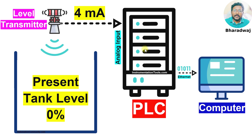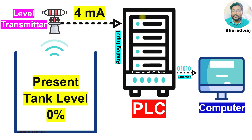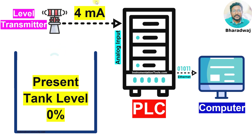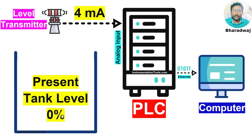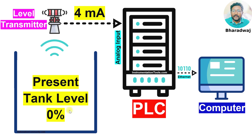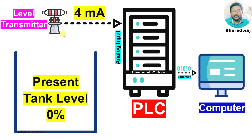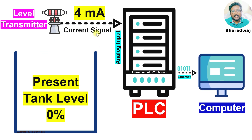The current range is 4 to 20 mA. The 4 mA represents the 0% signal of the process variable. That is why when the tank level is 0%, the transmitter is sending a 4 mA current signal to the PLC.